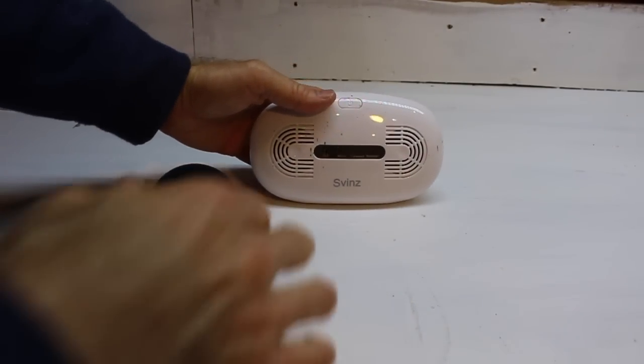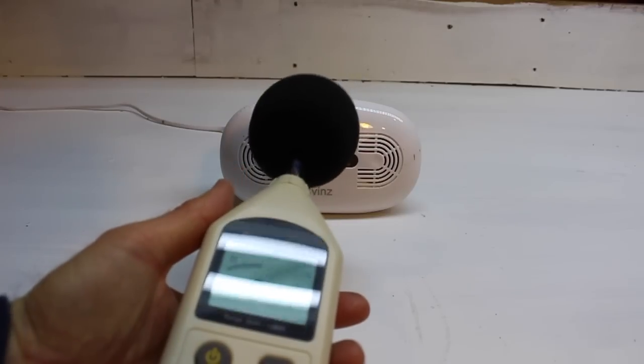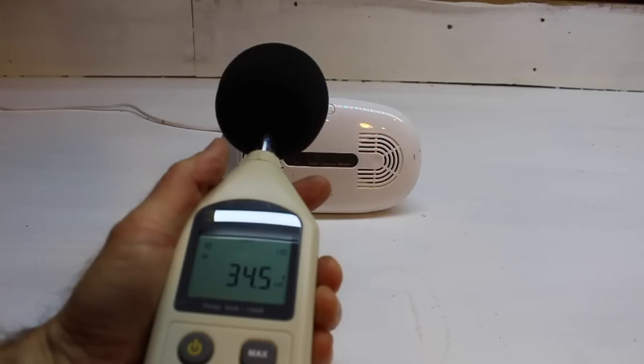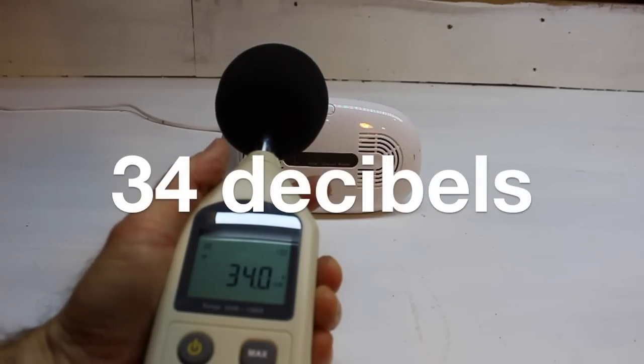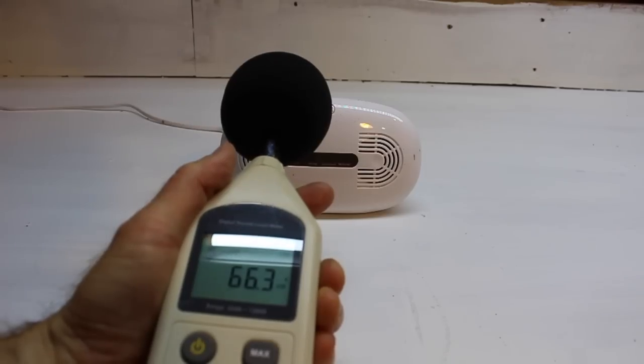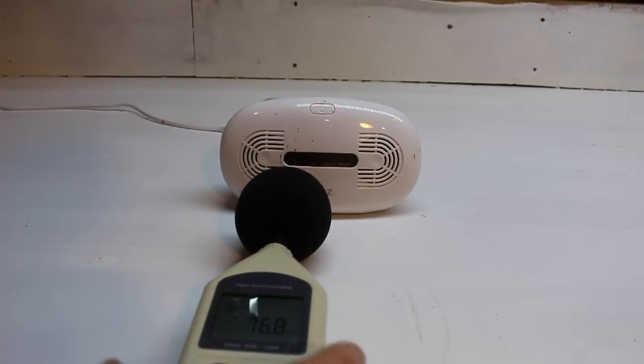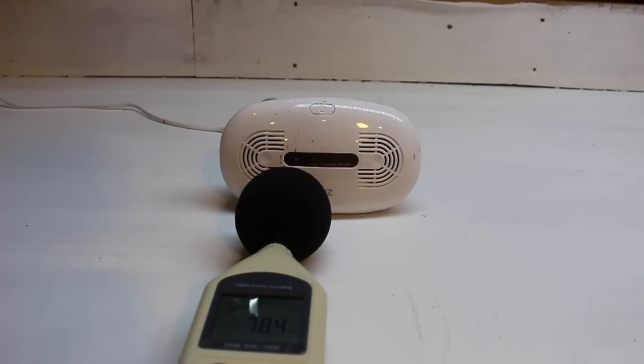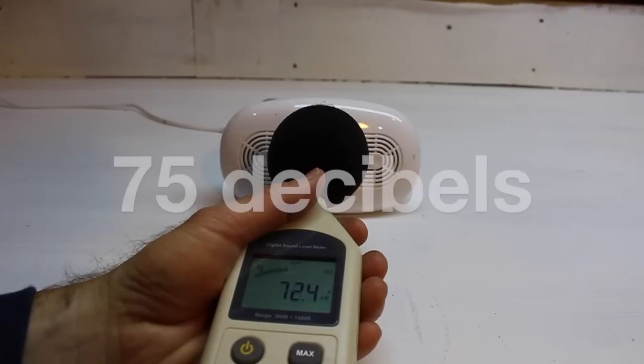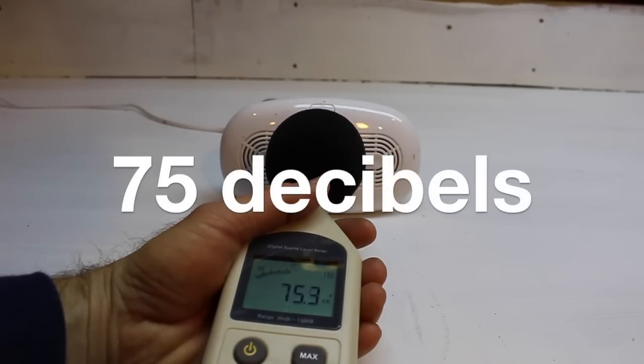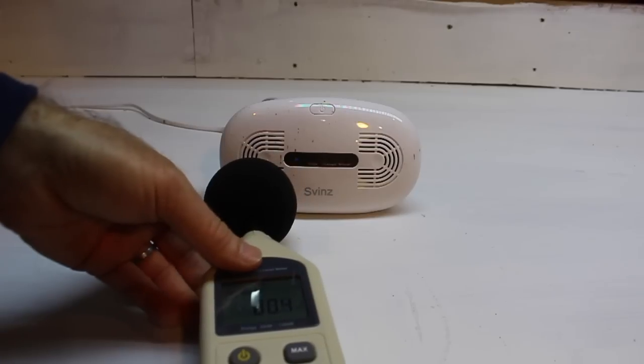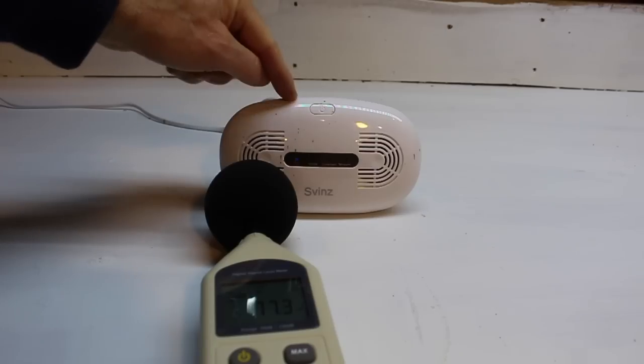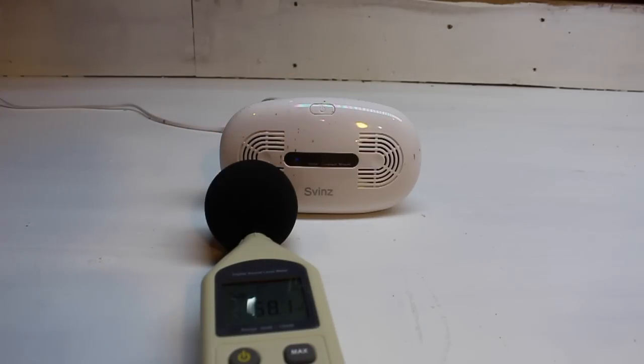So first up in the test is this ultrasonic emitter from Svins. First let's just get an ambient reading. Okay, so the ambient reading is right around 34 and I'm going to turn this guy on and we'll see what the reading is. So this guy right here is emitting between 20 and 40 decibels of ultrasonic high-frequency sound.